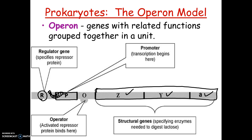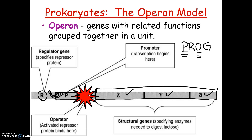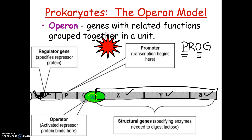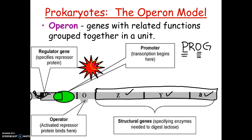Next is the operator. A way to remember the parts is the mnemonic PROG: Promoter, then Operator. The operator is a switch. A repressor protein can stick to the operator, and if it does, polymerase can't bind — the operon is off. When the repressor moves out of the way, the operon is on and making enzymes. So the operator is like a switch.